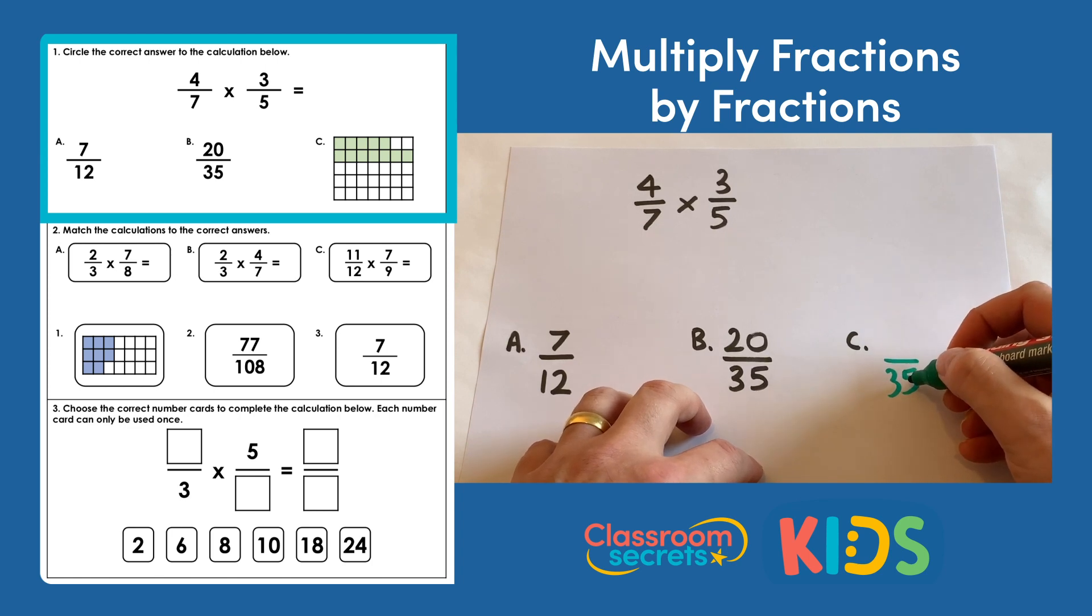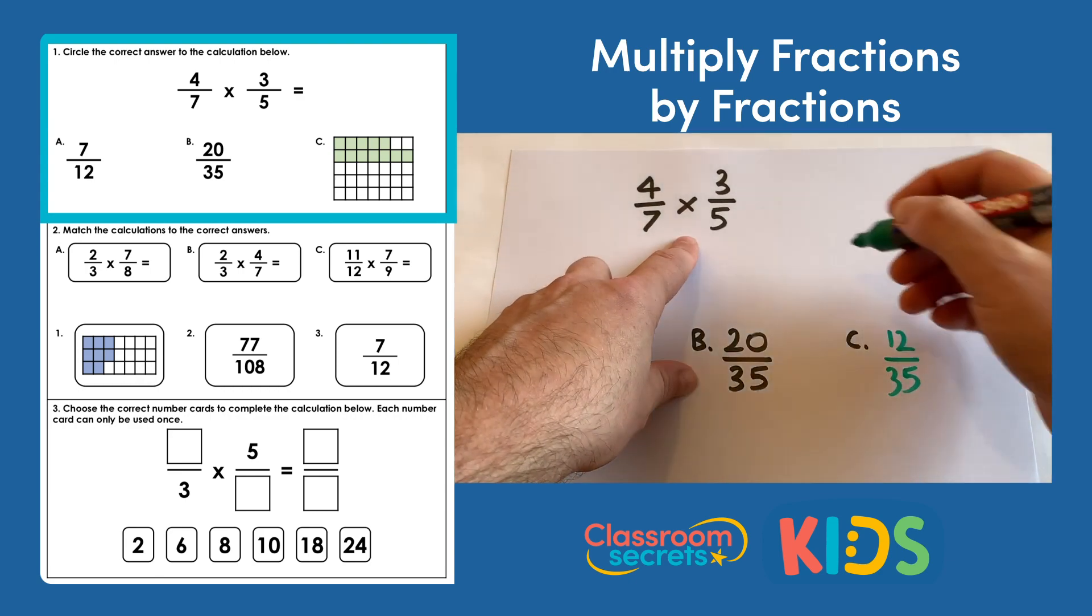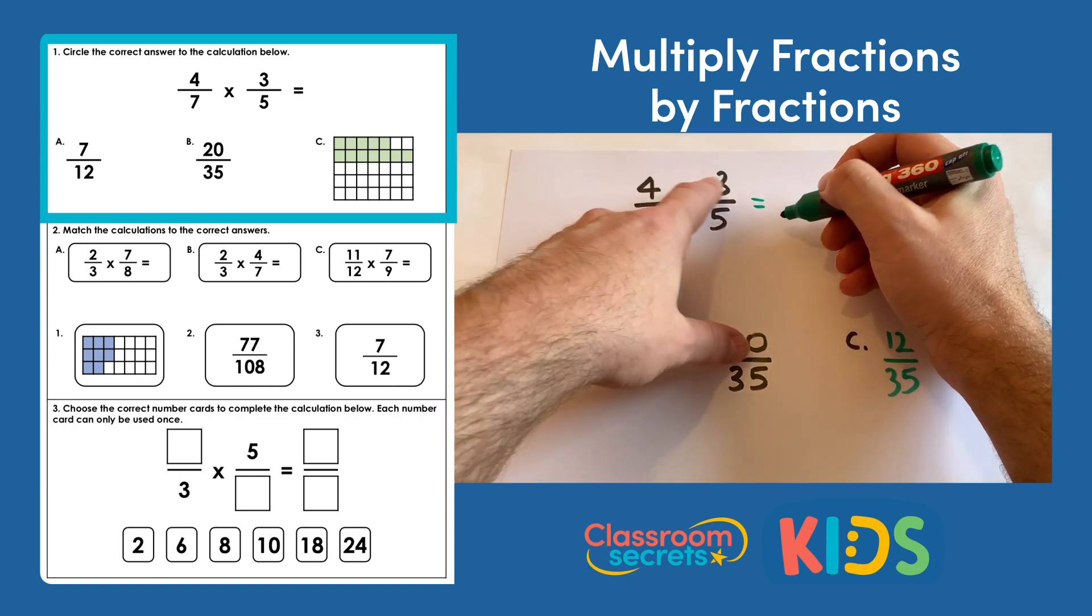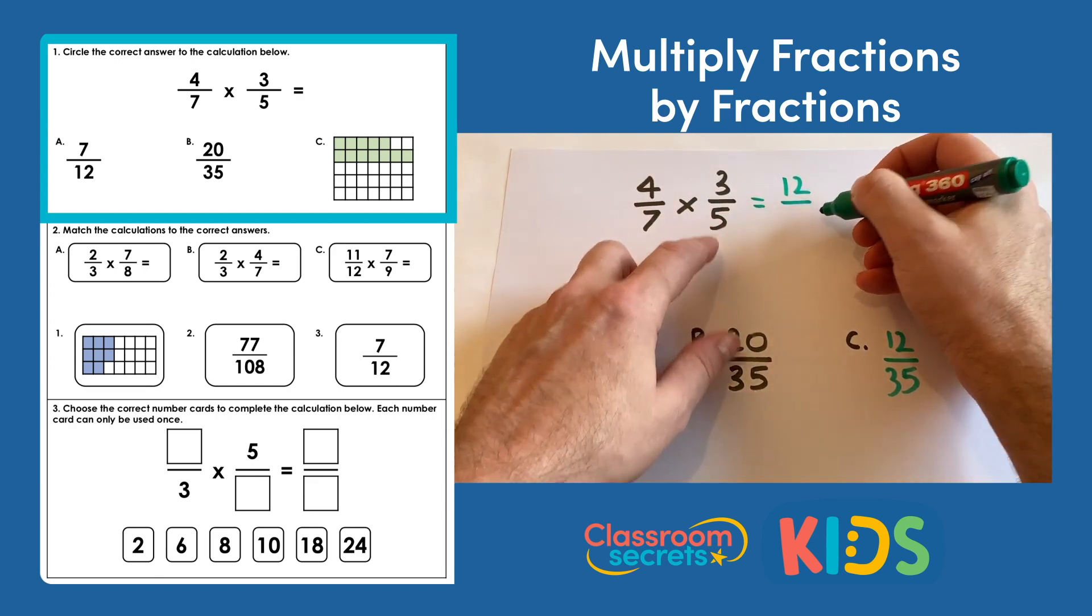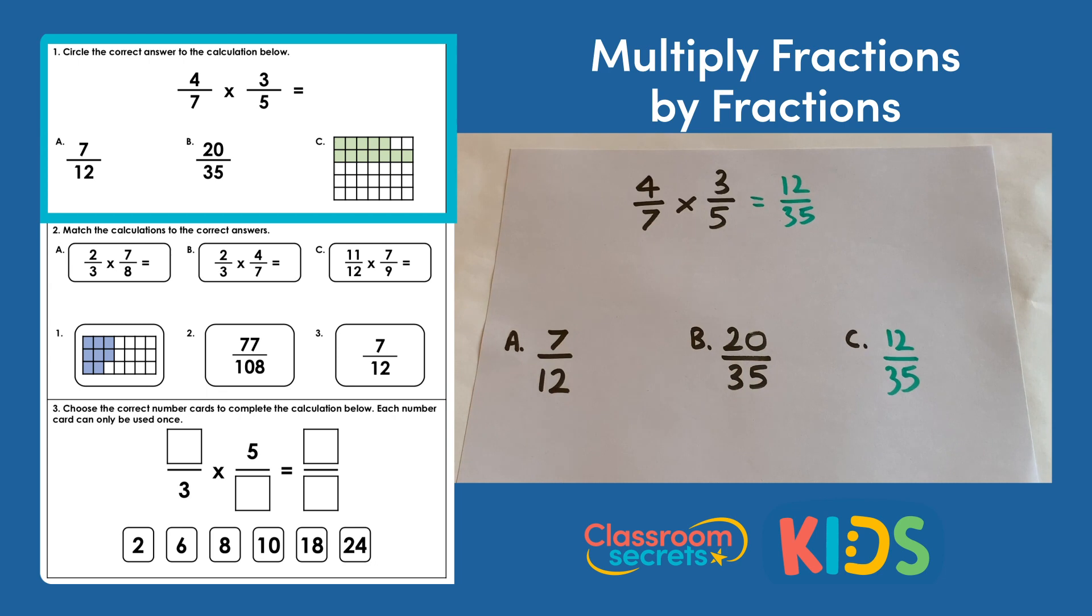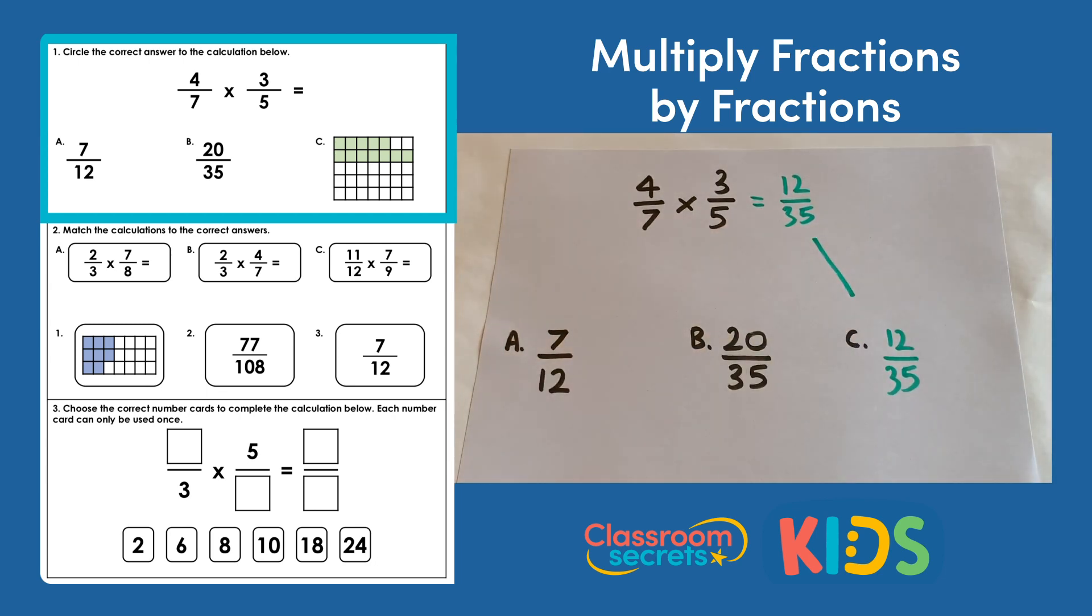The green highlighted parts—there are 12 of those—so that fraction would be 12/35. If we multiply 4/7 by 3/5, we multiply the numerators: 4 multiplied by 3 is 12, and the denominators: 7 multiplied by 5 is 35. So we have 12/35, so C will be the correct answer.